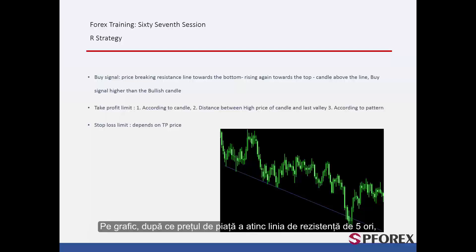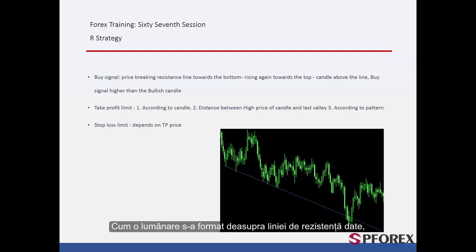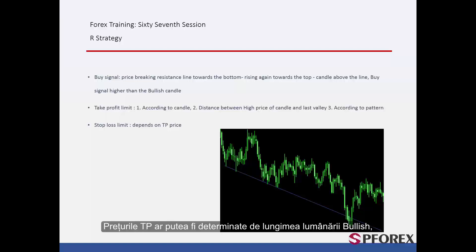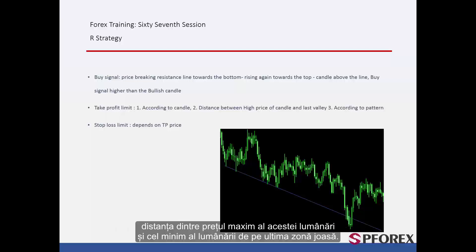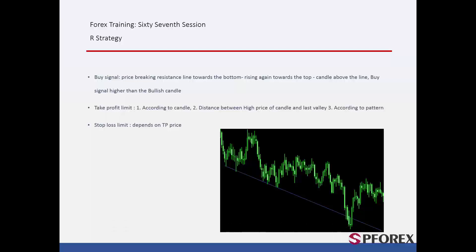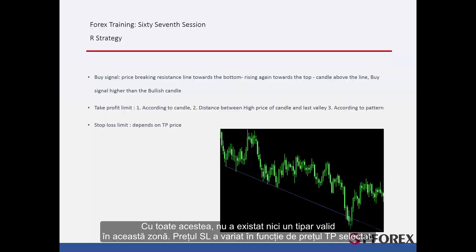On the graph, after the market price has hit the resistance line five times, it crossed the given line towards the bottom, then returned towards the top. As a candle formed above the given resistance line, a trader could place a buy order. TP prices could be determined by the bullish candle length and the distance between the high price of this candle and the low price of the candle on the last valley. However, there was no valid pattern in this region. SL price varied based on selected TP price.